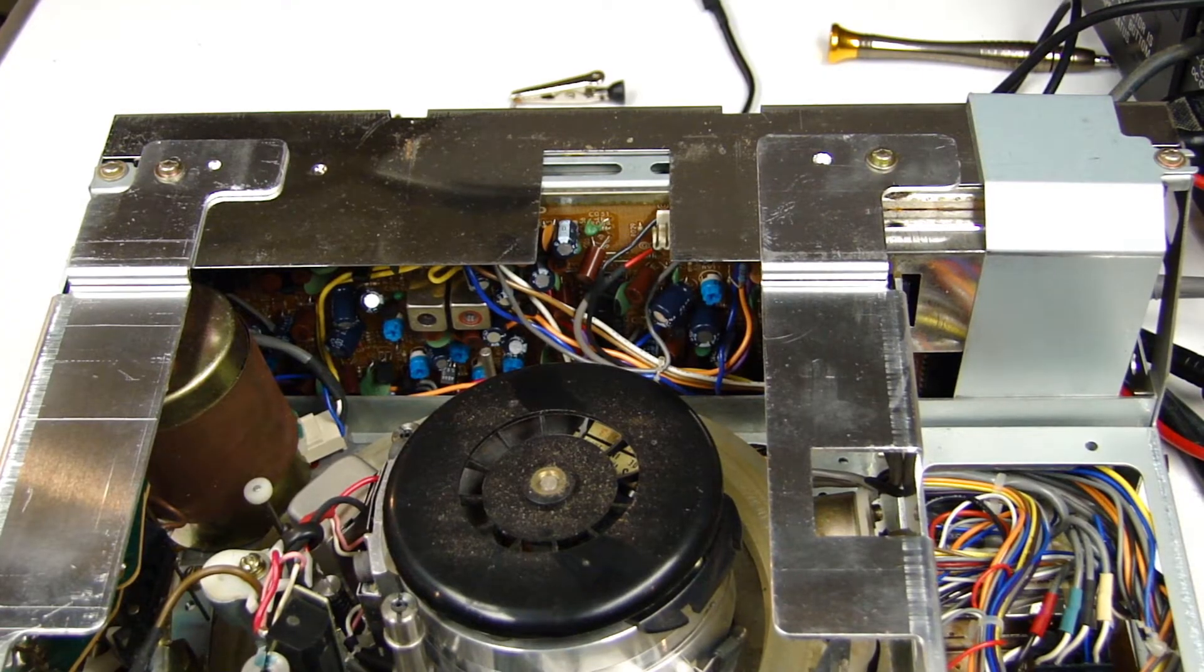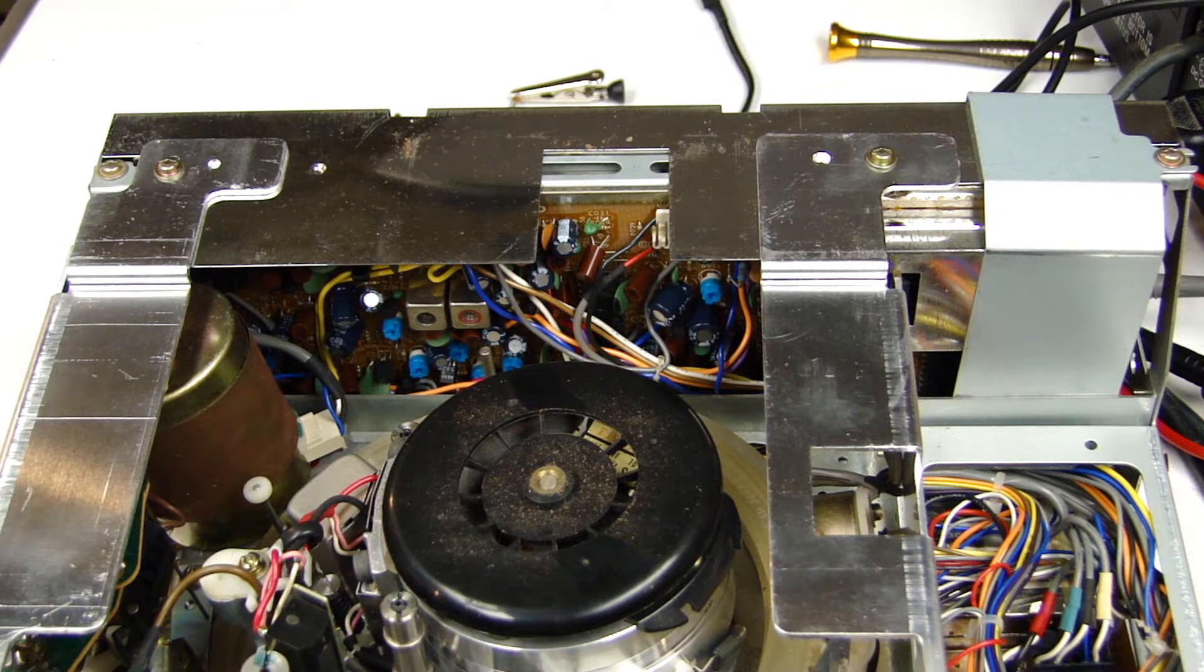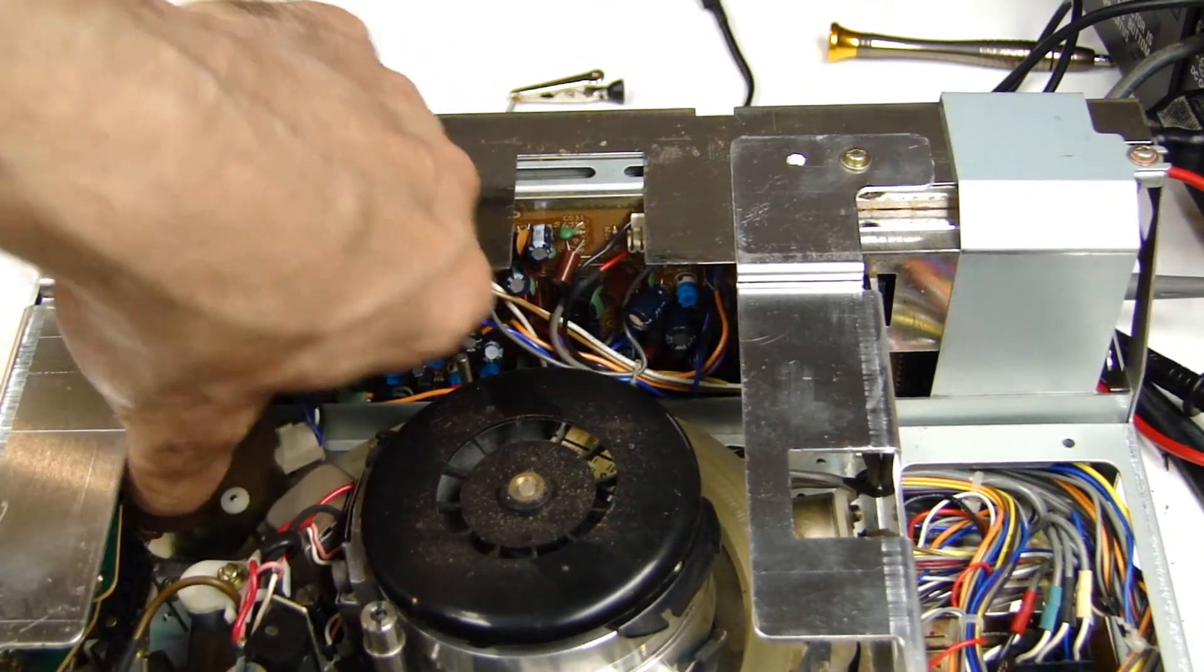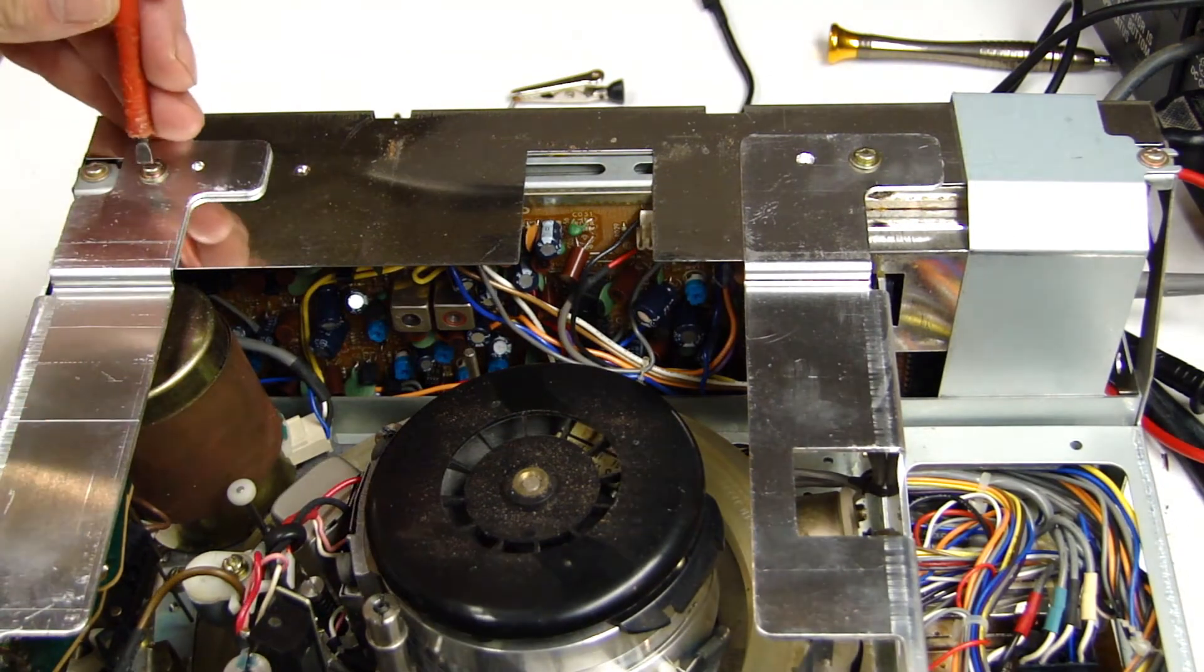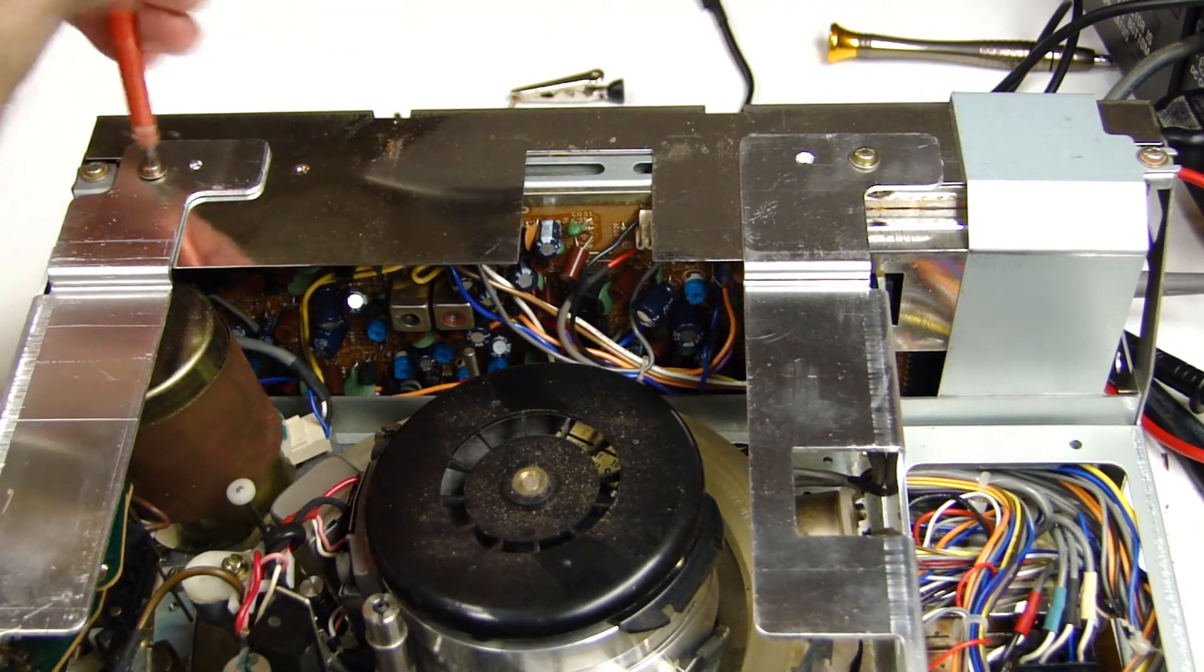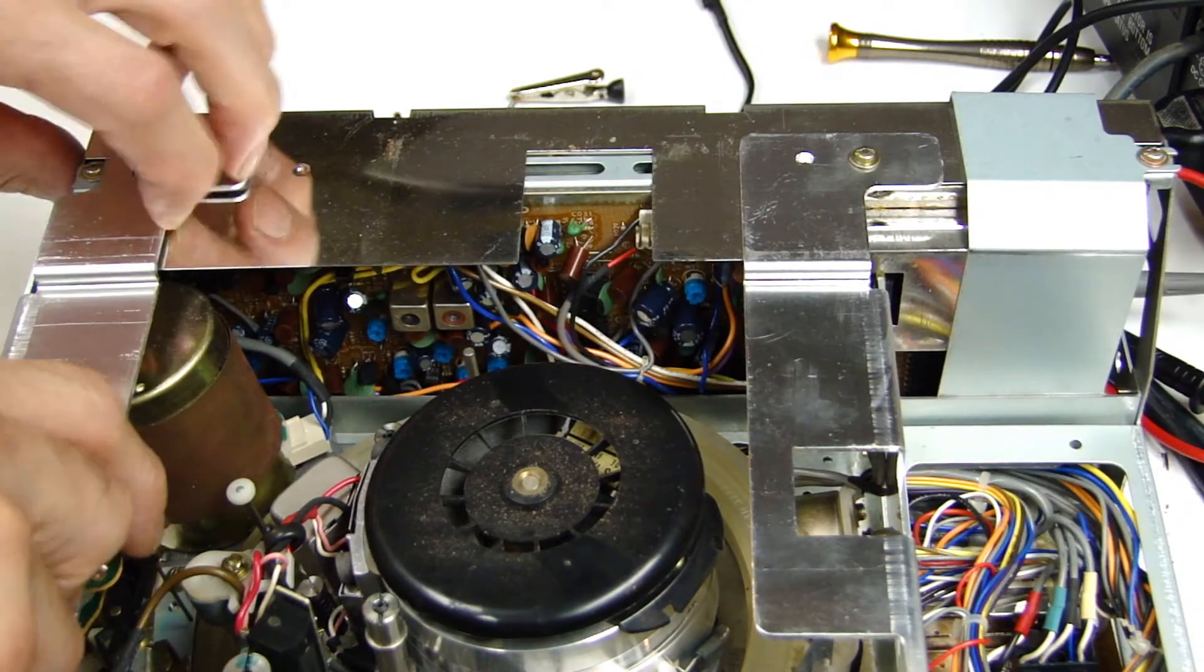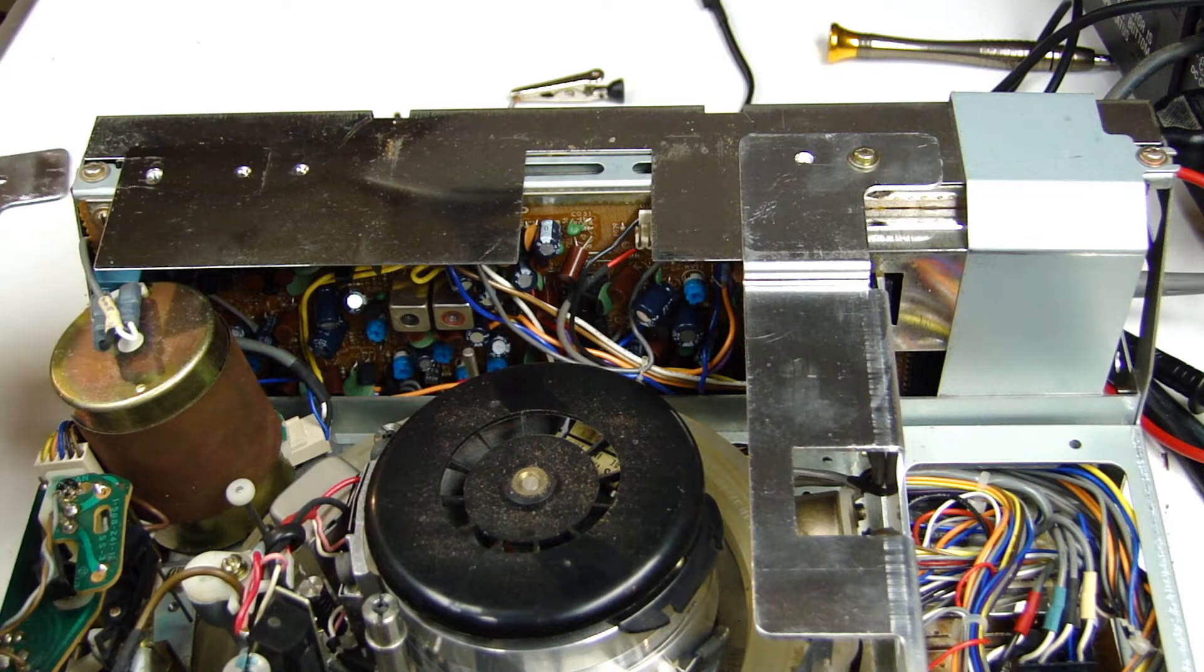Carefully turn the machine over and then remove the single screw at the top left. Bend the bar outwards - this will allow you to remove the motor.